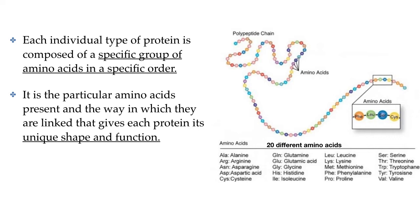Think about it like this: there are 26 letters in the English alphabet, and those letters can be put together in different ways to make an infinite number of different sentences. Each sentence has a different meaning, depending on which letters are put next to each other to form different words. And changes to the letters can change the meaning of a sentence.